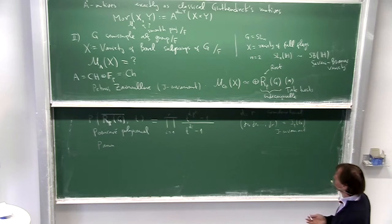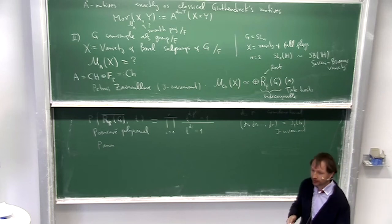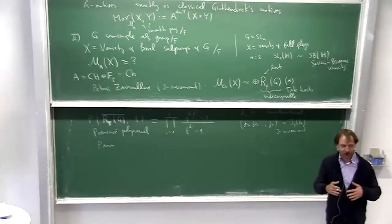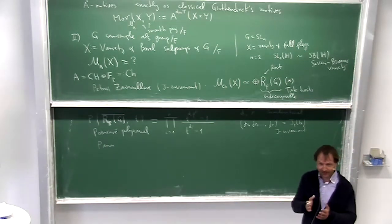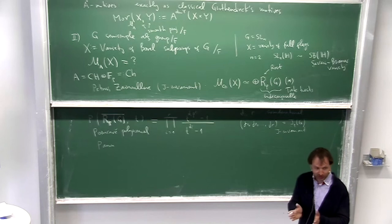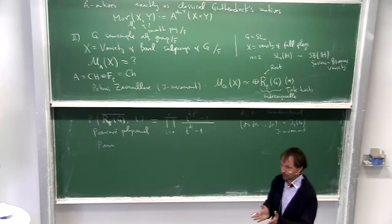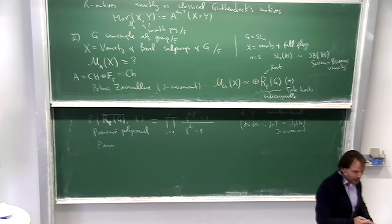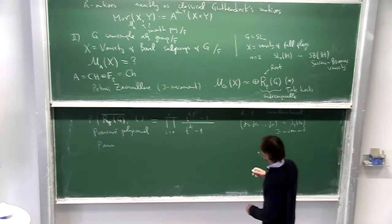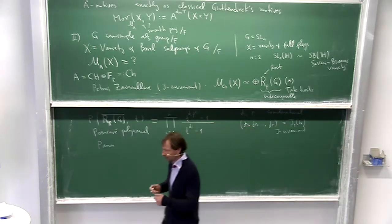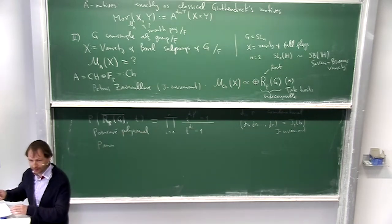Because the difference between Chow and K zero is essentially that this artificial element beta to the minus one. Because if you look at the formal group law X plus Y and X plus Y minus XY over beta, they look very similar. Well, like a mystery. And I would like to say, to explain you the solution.